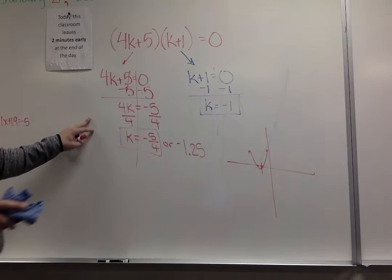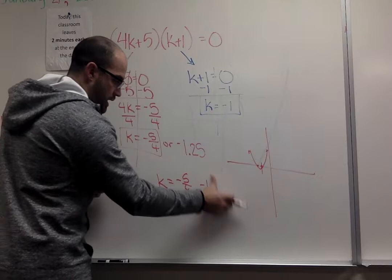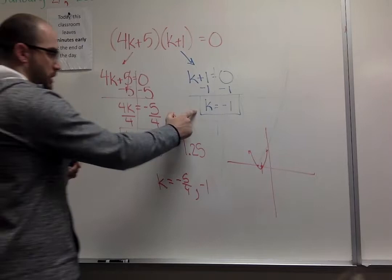That's an example of once it's already factored, how we would solve, get our two answers. You can write it like this, or you also see people write it like 5/4ths comma negative 1, so you have your two answers in one piece. I do not care which way you write it as long as you show me your solutions.